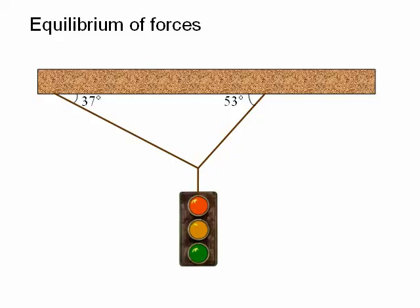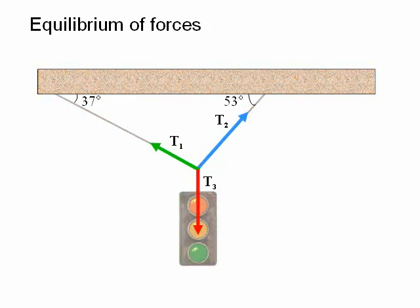To solve this problem, first we construct a free body diagram for the point where all the cables are tied together. Constructing a free body diagram means that we effectively isolate the point under consideration from its surroundings, and then draw all the forces that are acting through that point.